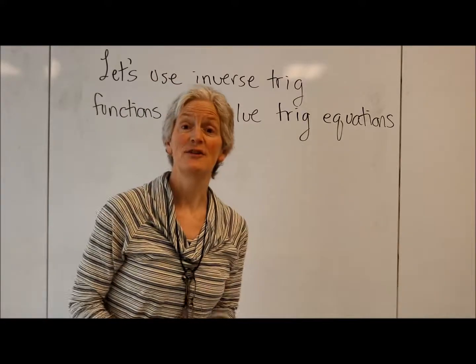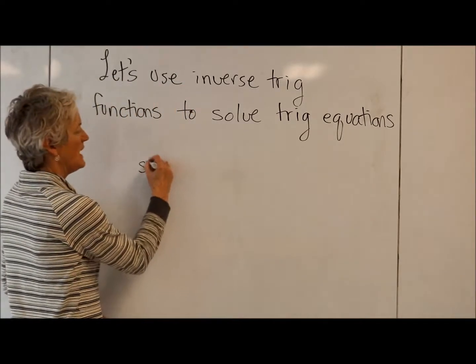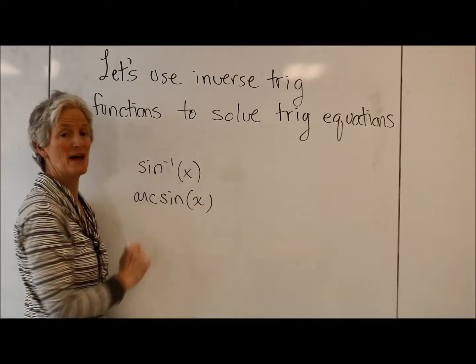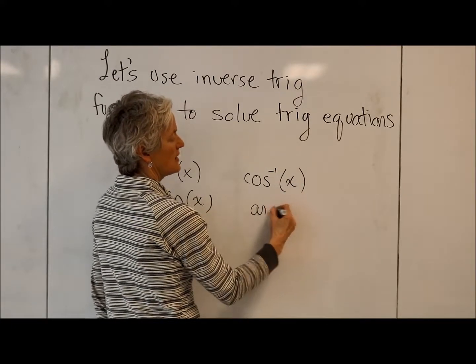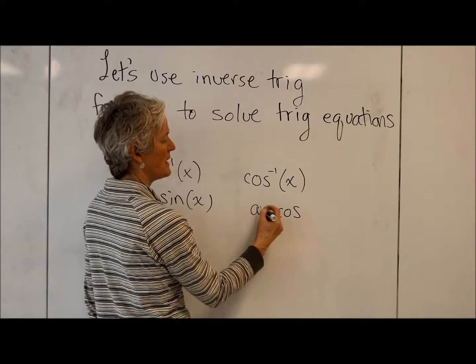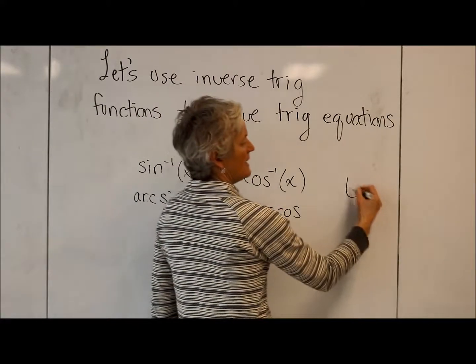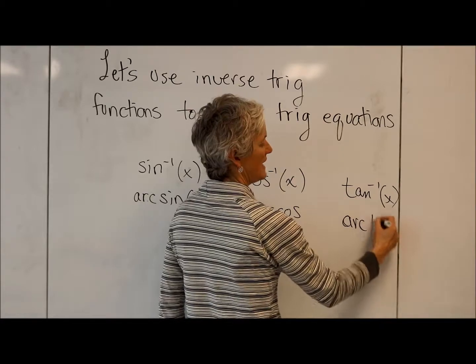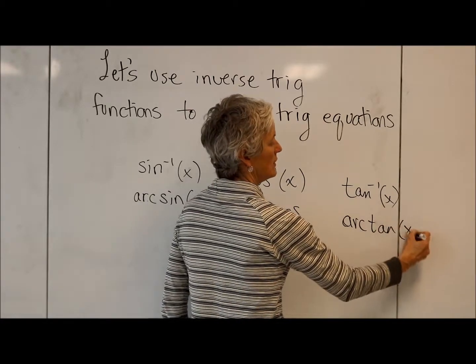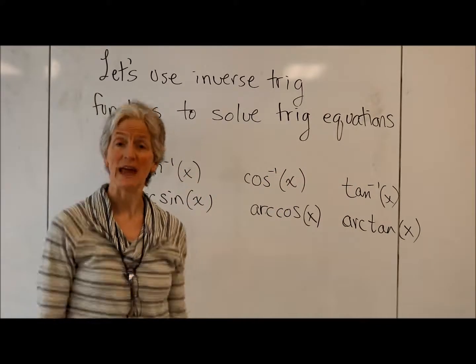So we're going to do that with our trig inverse functions. We have inverse sine, which I like using arc sine because it avoids that bad notation. Inverse cosine, which again, arc cosine is another way. And then inverse tan, which arc tan is what I will use from now on. Because again, that is not an exponent, it's just notation that means inverse.